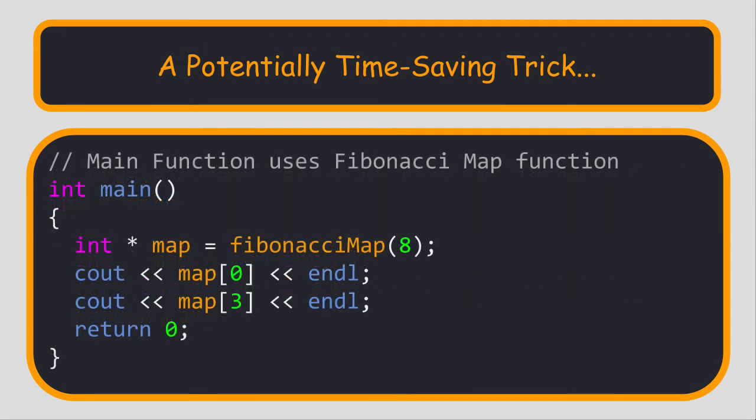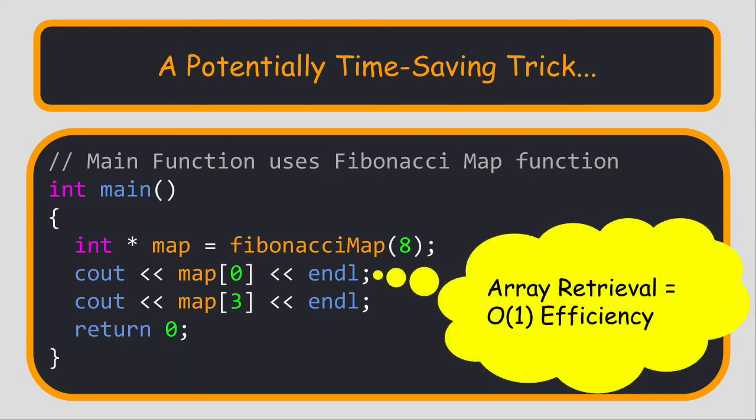Then, whenever you need some term in the Fibonacci sequence, you just retrieve it from the array instead of computing the result. Technically, the time it would take to retrieve an element from the array would be time O of 1.